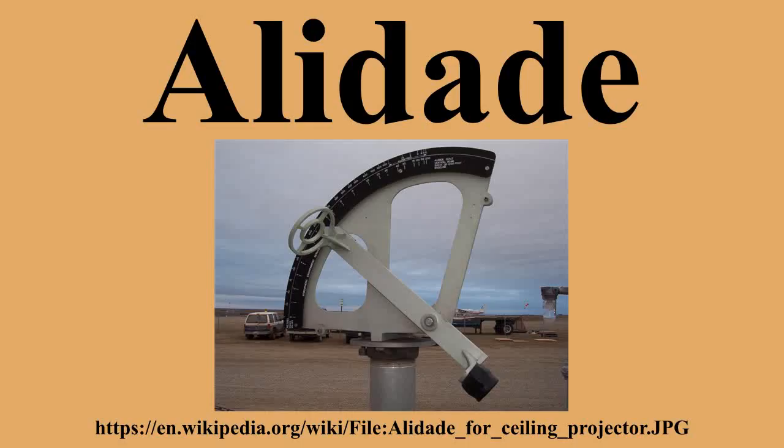One alidade type has vanes without any openings. In this case, the object is viewed and the alidade is rotated until the two opposite vanes simultaneously eclipse the object. With skill, this sort of alidade can yield very precise measurements. In this example, pointers are shown.